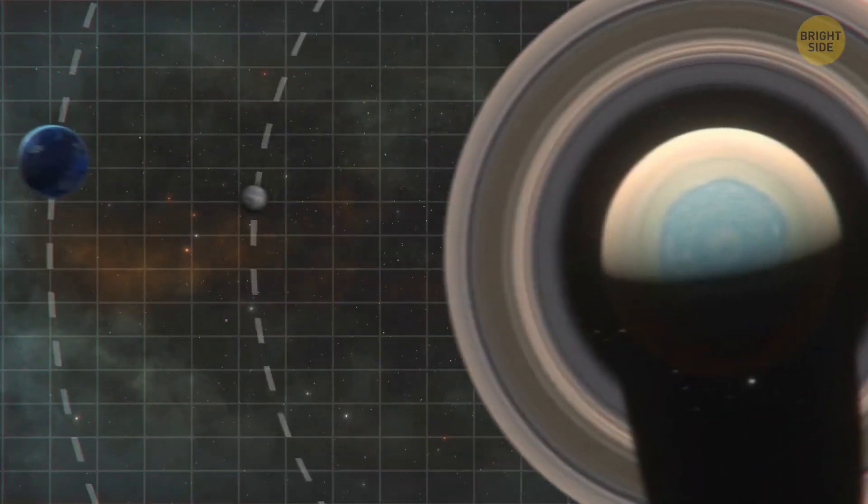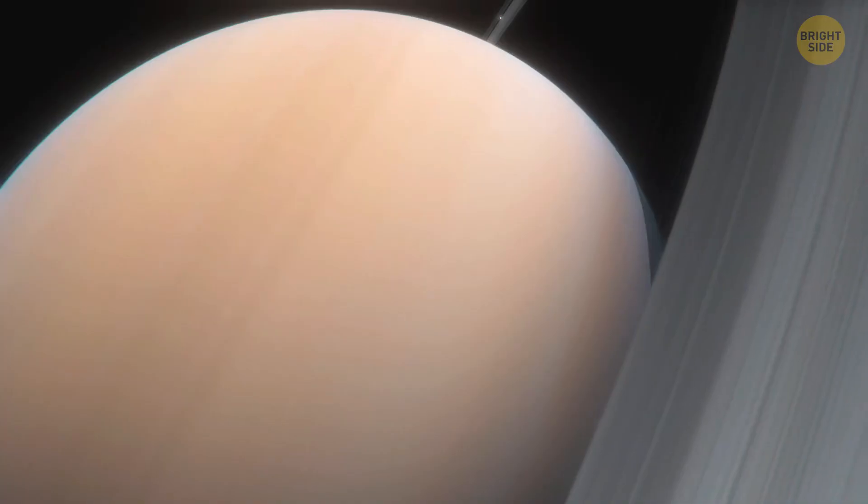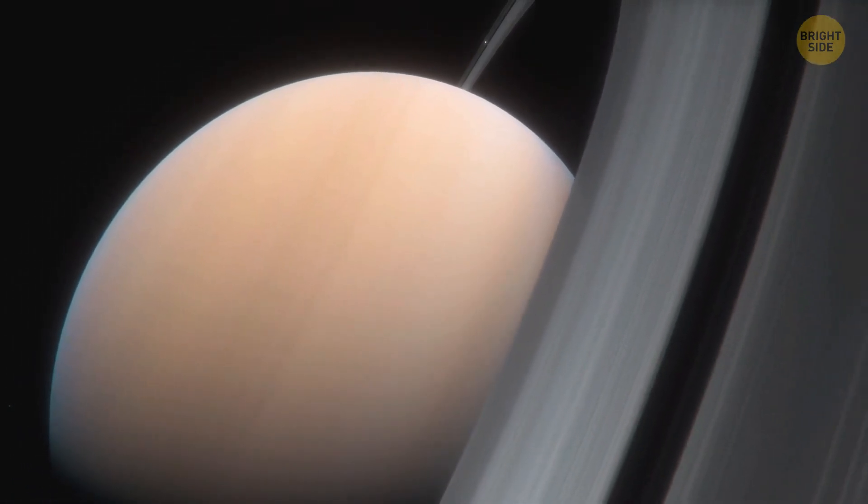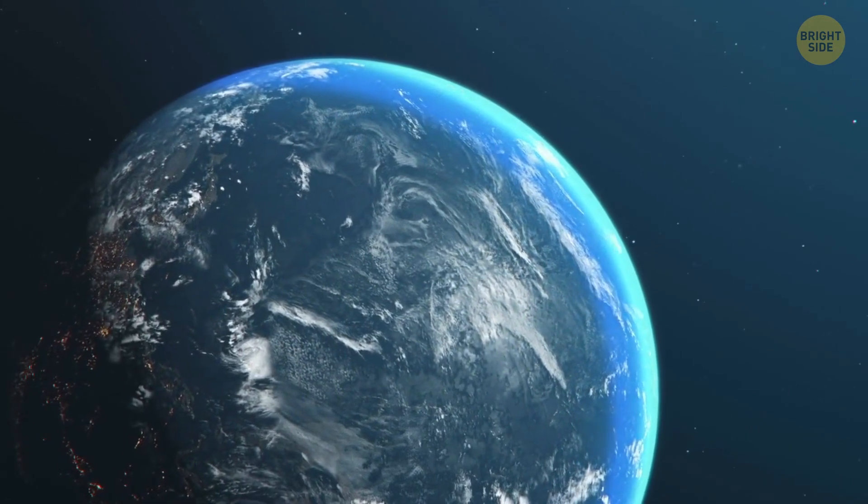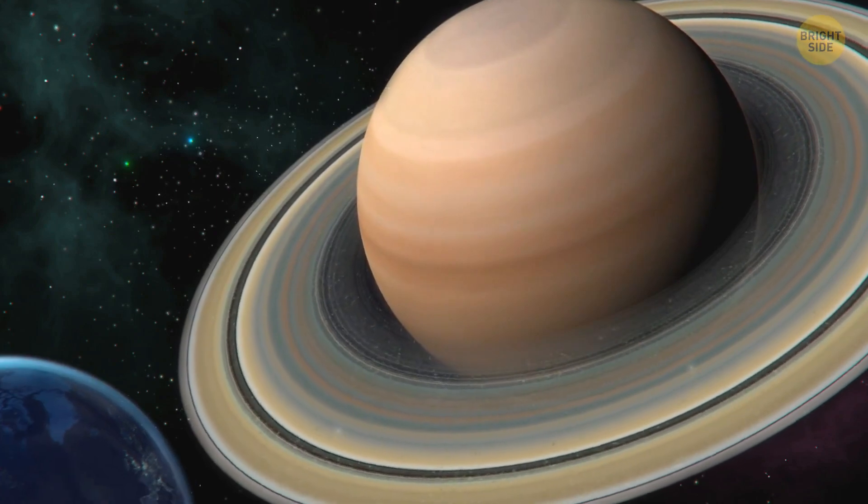Earth would be a bit further away from the gas giant than its own moon, Dion. And since Saturn is way more powerful than our planet, Earth would turn into its satellite, not the other way around. Unfortunately, Earth's rotational speed wouldn't be enough to keep up, and we'd most likely crash into the much larger planet within a day or two.